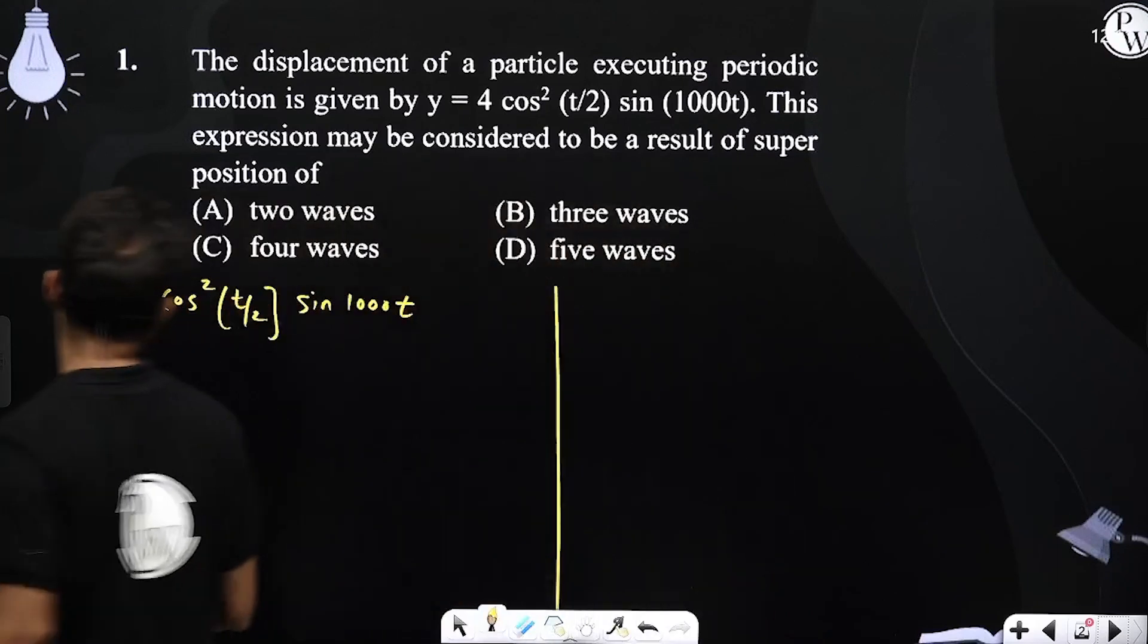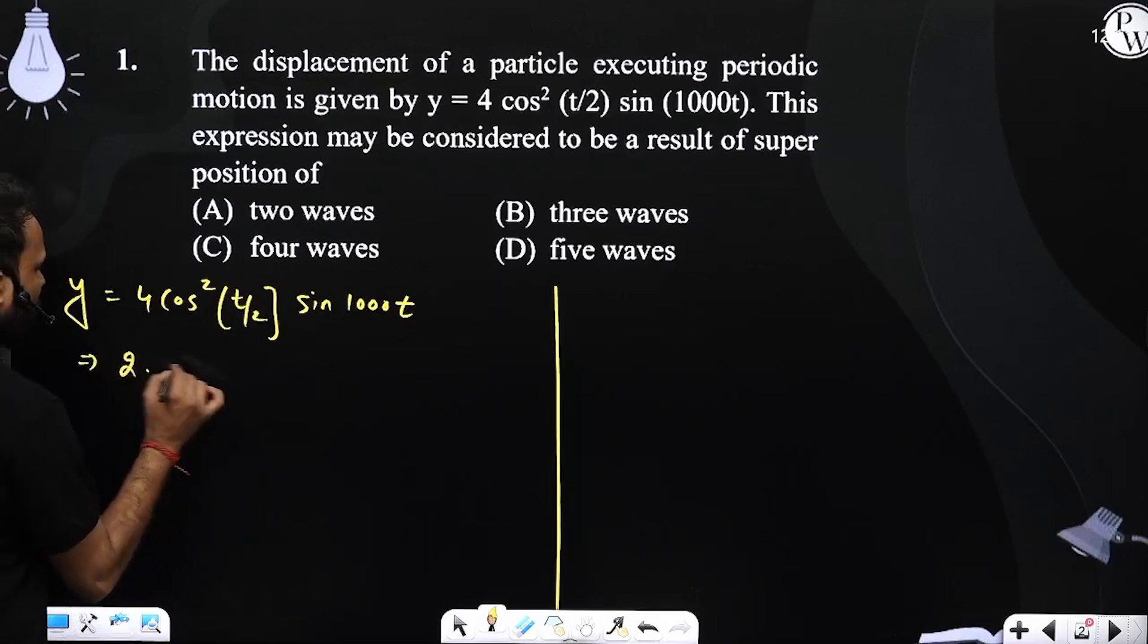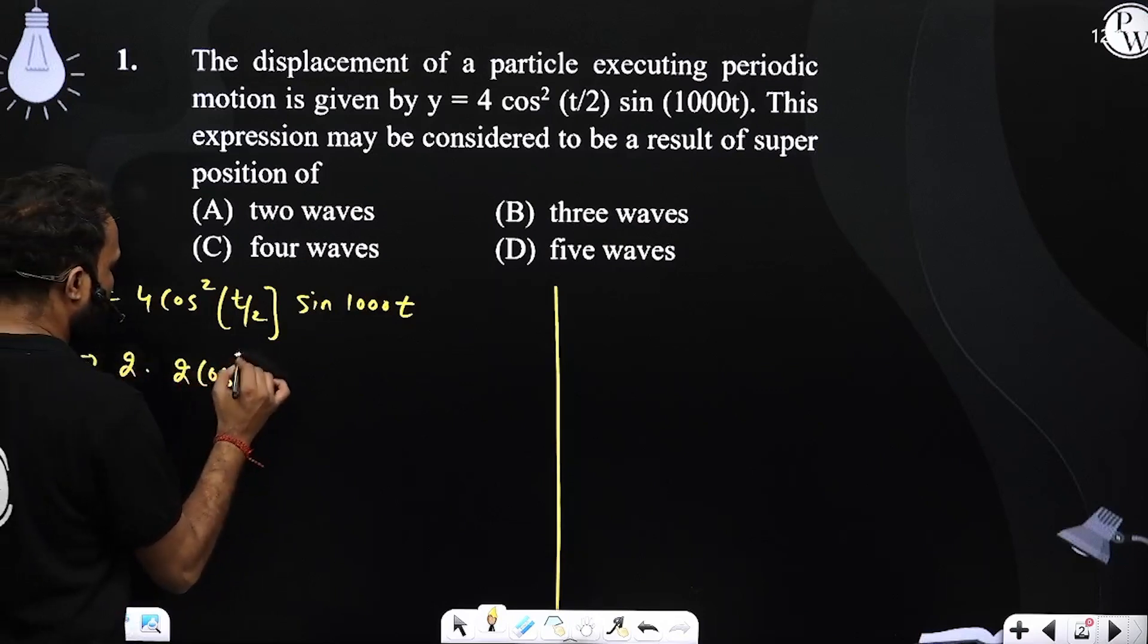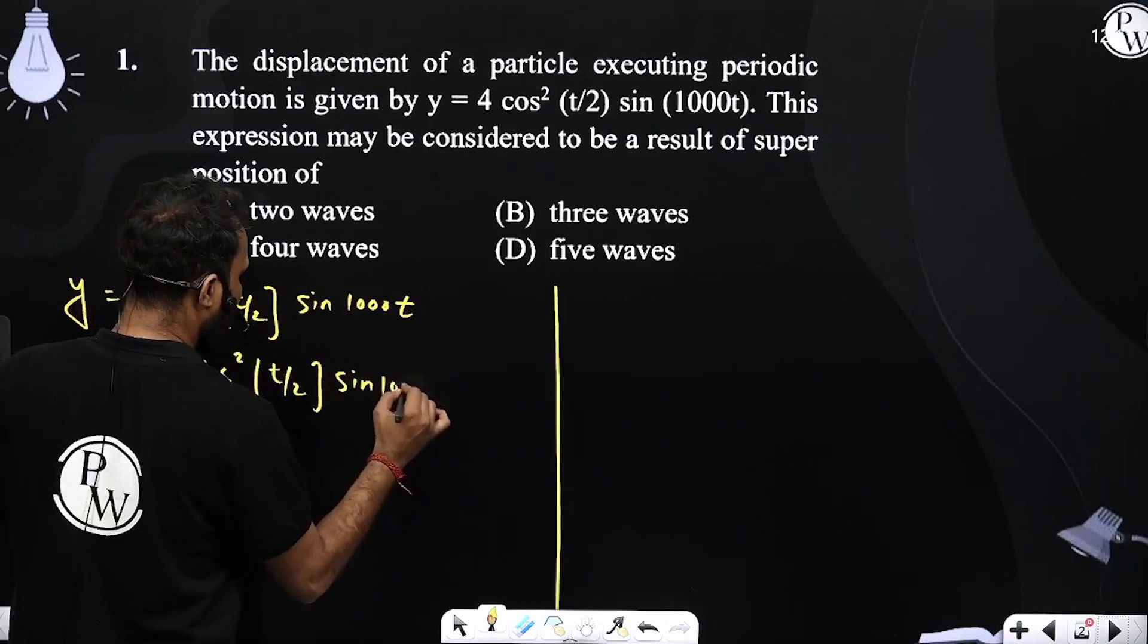We have been asked how many SHMs superposition. So let us simplify this. We can write 2 into 2 cos square t by 2 into sin 1000t.